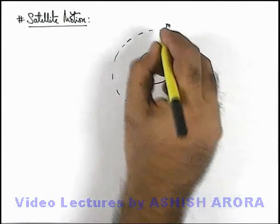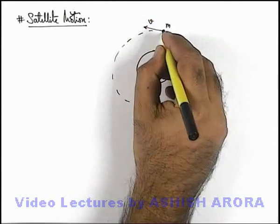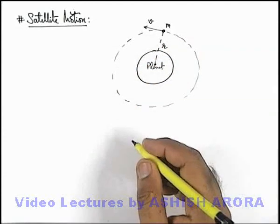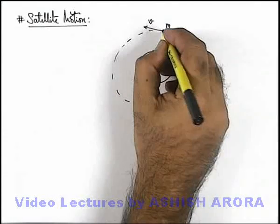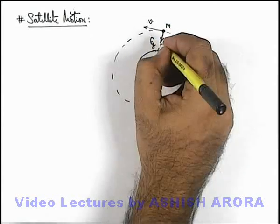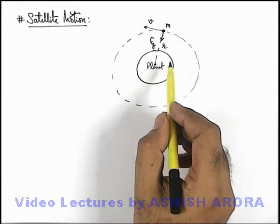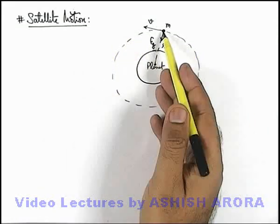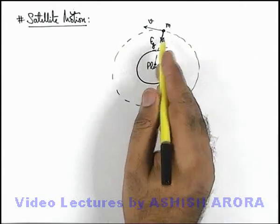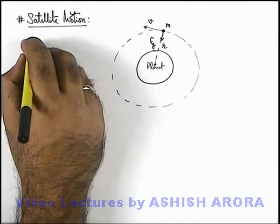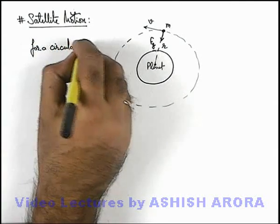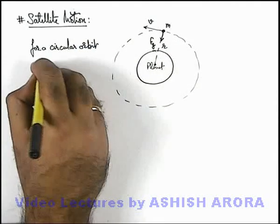We can simply state here the gravitational force acting on the body due to the gravity of planet will provide the necessary centripetal force for its circular motion. Such kind of bodies which revolve around a planet are called satellites. We can simply state for a circular orbit satellite motion...